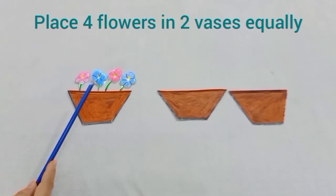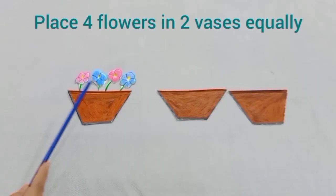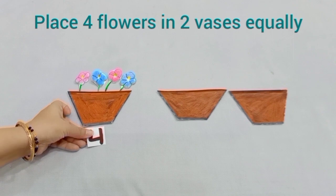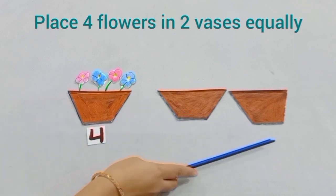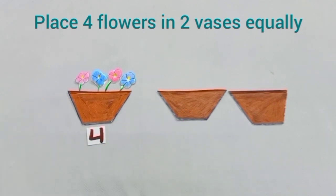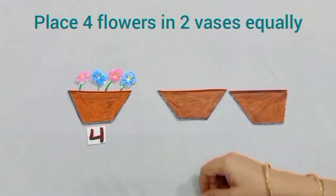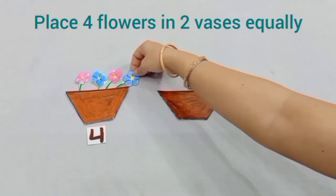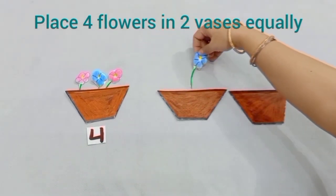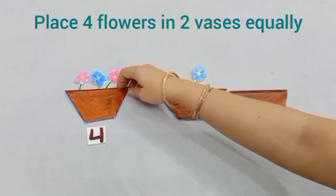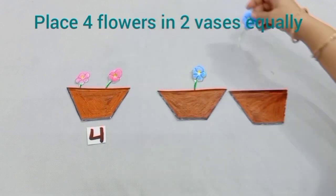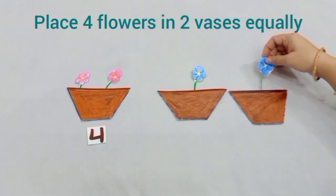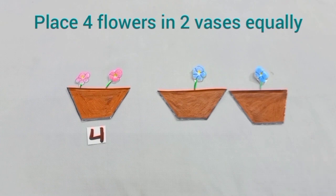Now, dear students, we have to place these 4 flowers in these 2 vases equally. Firstly, I am placing 1 flower in the 1st vase and 1 flower also in the 2nd vase.